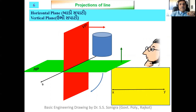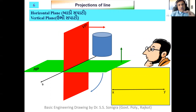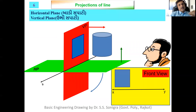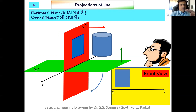To draw the projection of a given cylinder, first draw the XY line. Looking from the front side gives the front view — the cylinder appears as a rectangle with width equal to the diameter and height equal to the height of the cylinder. This front view will be above the XY line since the cylinder is in the first quadrant. If the cylinder were in the third quadrant, the front view would be below the XY line.